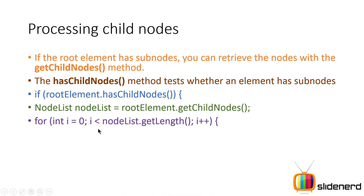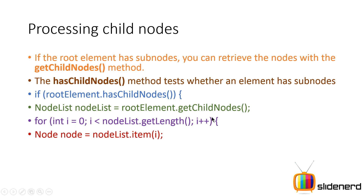getChildNodes() returns a NodeList. We can process through the NodeList by writing: for i = 0; i < nodeList.getLength(); i++. nodeList.item(i) — meaning child at position zero, child at position one — they all get stored inside a new Node object. Using the methods we talked about that belong to the Node interface, we can process the items and so on.